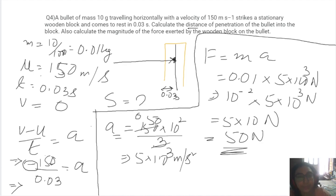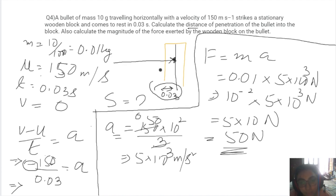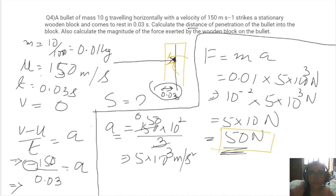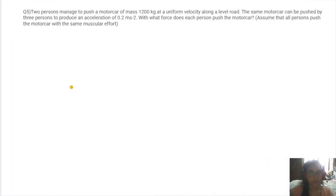So the force applied by the wooden block on the bullet is 50 N. That is due to the force that stops the bullet after travelling for 0.03 seconds inside the wooden block.